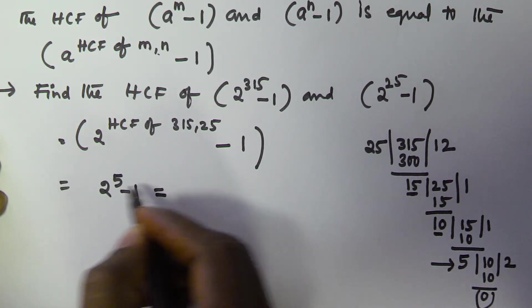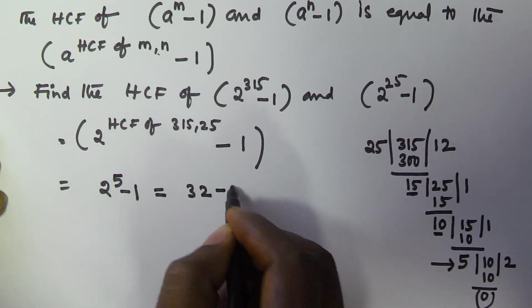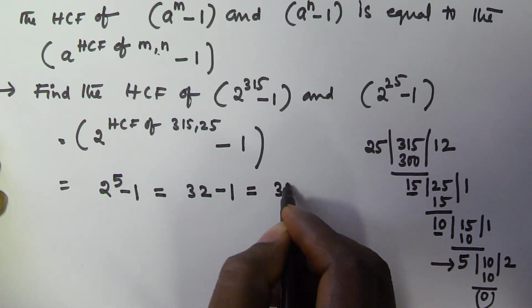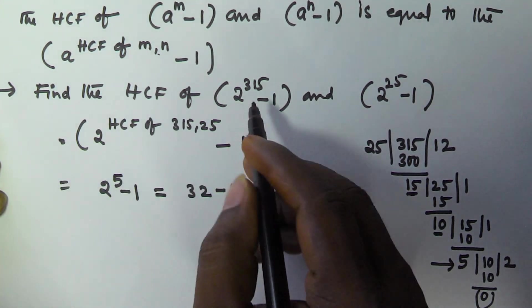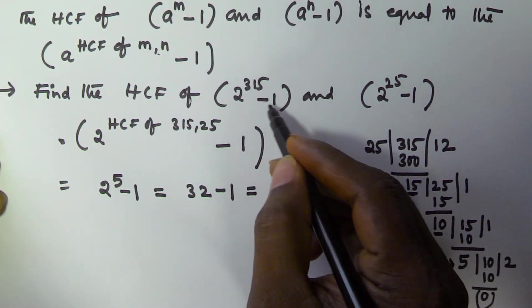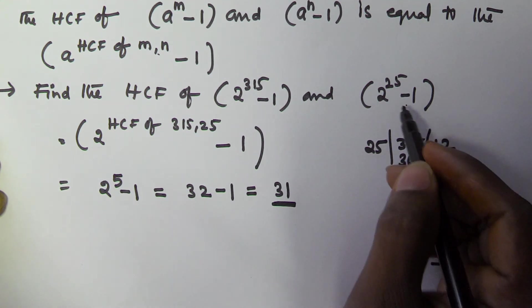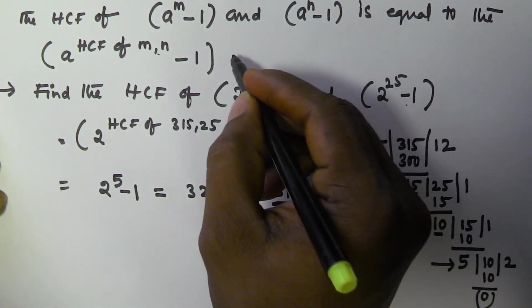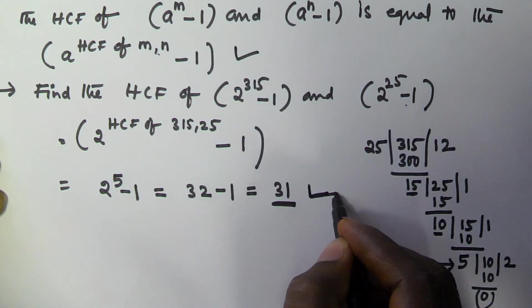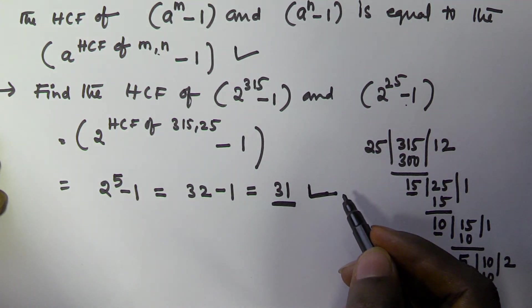So the answer is 2 to the power of 5 minus 1. Since 2 to the power of 5 is 32, the answer is 31. I hope you understood this logic and this example. Thank you very much for watching this video, please subscribe to my channel.